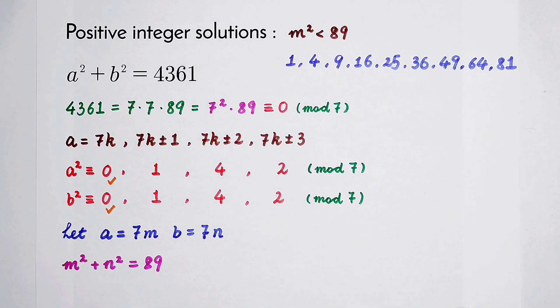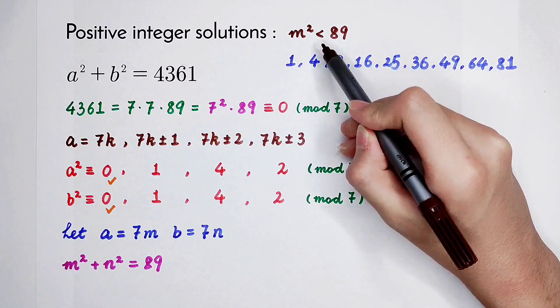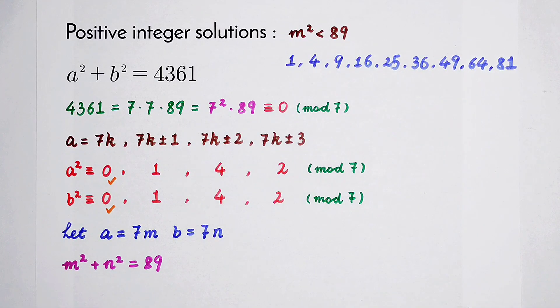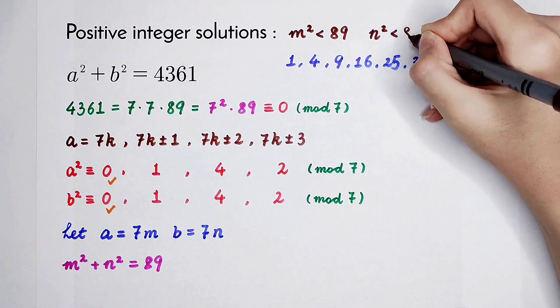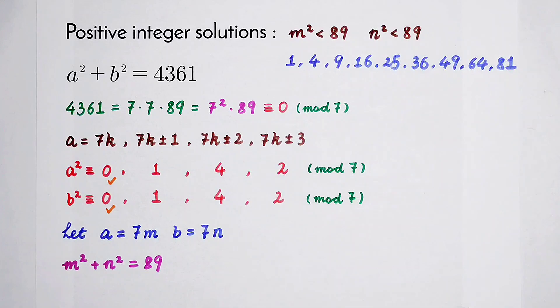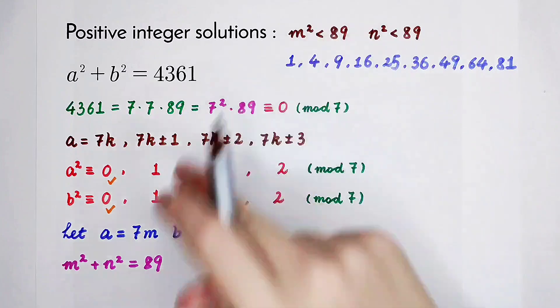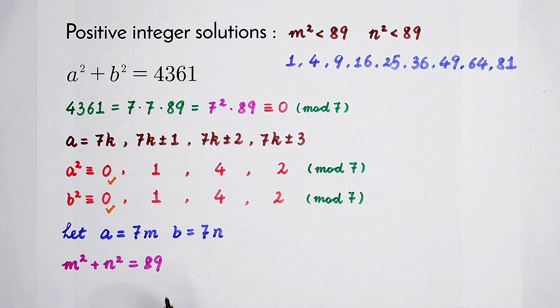What about n squared also? It also should be less than 89. That means we should find out two numbers from here, and their sum is 89.